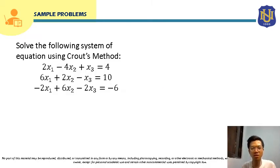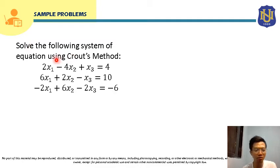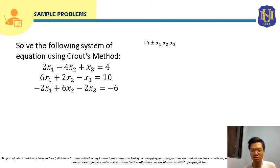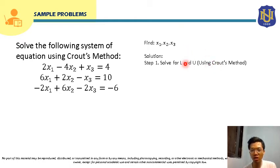Now let's solve the same system of equations using Crout's method to show it gives the same answer. For Crout's method, we are again asked to solve for X1, X2, and X3. The coefficient matrix A is the same: row 1: 2, -4, 1; row 2: 6, 2, -1; row 3: -2, 6, -2. We equate it to the factored product of the lower and upper triangular matrices.